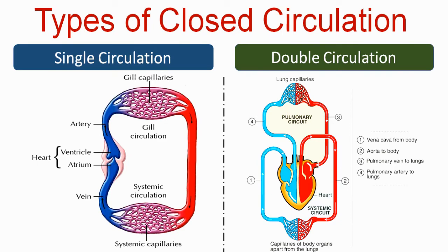In single circulation, oxygenated blood is carried by blood vessels towards different body organs. Those organs deoxygenate the blood, and deoxygenated blood is carried by veins back to the heart. The path is: heart → gills → body organs → heart. Blood passes through the heart only once per cycle.